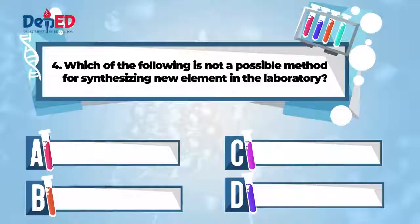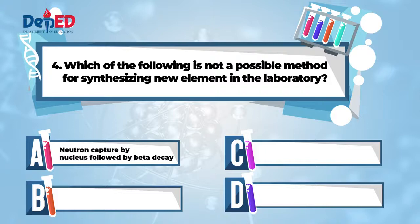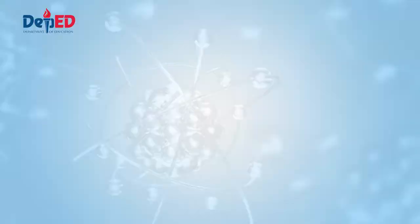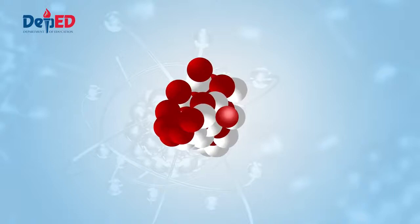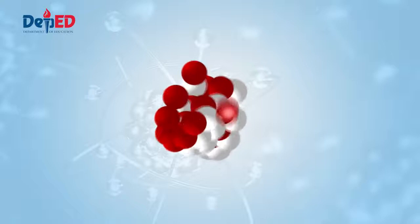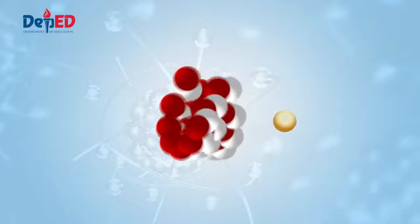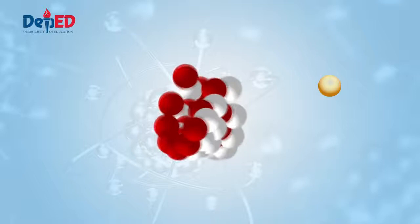Which of the following is not a possible method for synthesizing new elements in the laboratory? A. Neutron capture by nucleus followed by beta decay B. Direct addition of protons to the nucleus C. Direct addition of a nuclear projectile that contains one or more protons Or, letter D. Mixing chemicals to form new elements. That's a tough question, Manuel. Okay, for letter A, when nucleus captures or absorbs a neutron, it sometimes makes the nucleus unstable because of too many neutrons compared to protons. This instability results to beta decay, where one neutron is converted into proton. And a beta particle, an anti-neutrino, is released. Now, that the nucleus has more protons, new element was synthesized. So, A is not the answer.